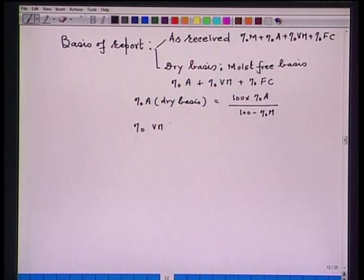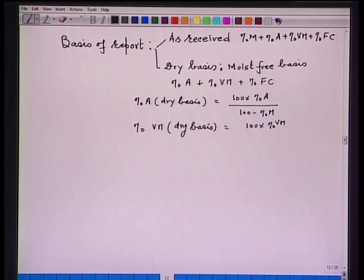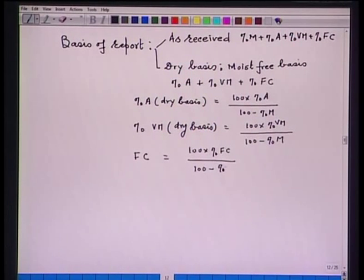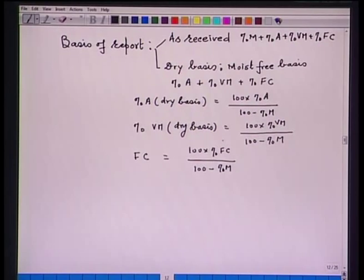Similarly, percentage volatile matter on dry basis = 100 × (percentage volatile matter) / (100 − percentage M). And fixed carbon on dry basis = 100 × (percentage fixed carbon) / (100 − percentage M). Fixed carbon can also be determined by subtracting percentage ash on dry basis plus percentage volatile matter on dry basis from 100.